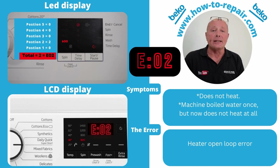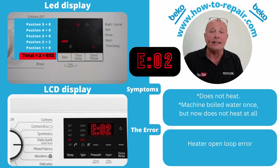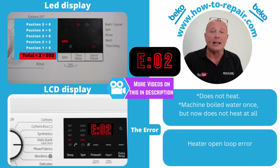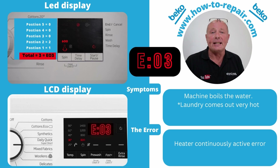Error code 2 relates to the heating system. Your machine may not be heating water, may have tripped the electricity supply, or you may have an element that has gone open circuit, or a faulty relay on the circuit board controlling the heating system. E02 is displayed on the LCD version; on the LED version the second spin position illuminates, giving a value of 2. A video below shows how to test the element, check the wiring, and understand the relay.